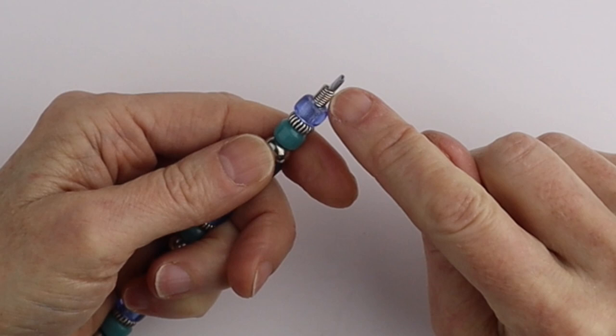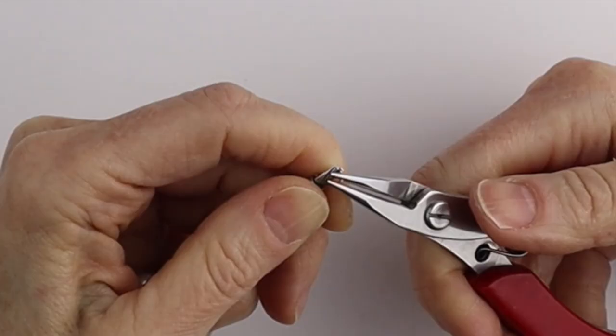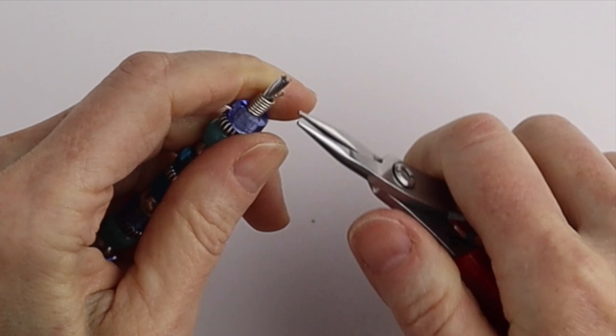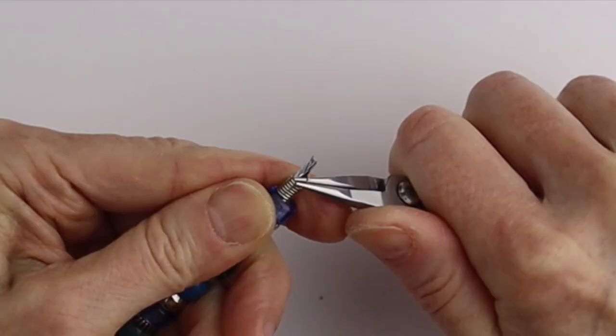To finish it off you can glue a little spring or bead on the end, or you can take these ends, separate them, take your round pliers and just curve it around. Make sure there's no pokey ends and this will hold that spring in place.